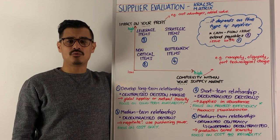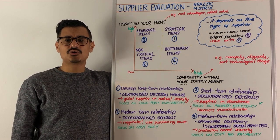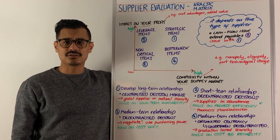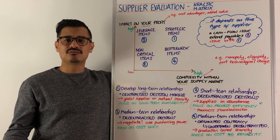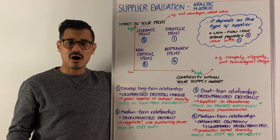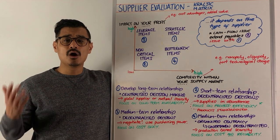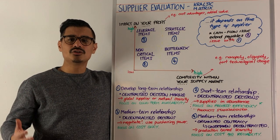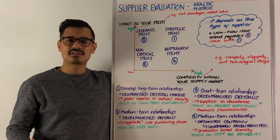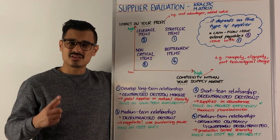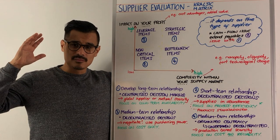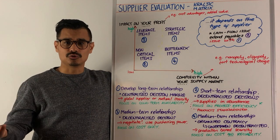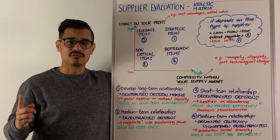Let's have a session on supplier evaluation. If you're evaluating your suppliers, you might want to use the Kraljic model or the Kraljic method. You could also use Porter's Five Forces and think about the bargaining power you have over your suppliers — more details on Porter's Five Forces, click the card up there. But if you want to go into even more depth on those suppliers, think about Peter Kraljic's 1983 Kraljic model, as seen in the Harvard Business Review.